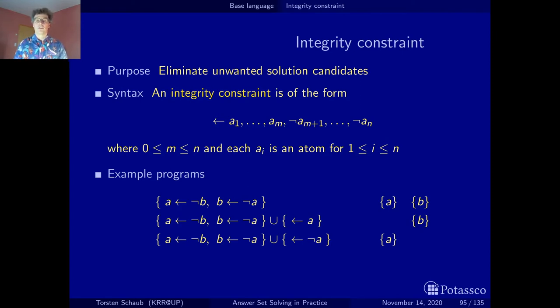This is the role of integrity constraints. You can actually separate a program into the program and all the integrity constraints, then compute the stable models of the program without integrity constraints, and then just check the integrity constraints in the end to eliminate unwanted solution candidates.